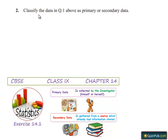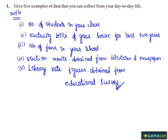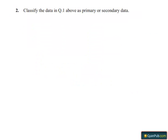The second problem: classify the data in question number 1 above as primary or secondary data. Let's see question number 1 once again. In question number 1, they have given: give 5 examples of data that you can collect from your day-to-day life. We have given 5 examples, and now in the second question, they have asked to classify whether those examples are primary or secondary data.